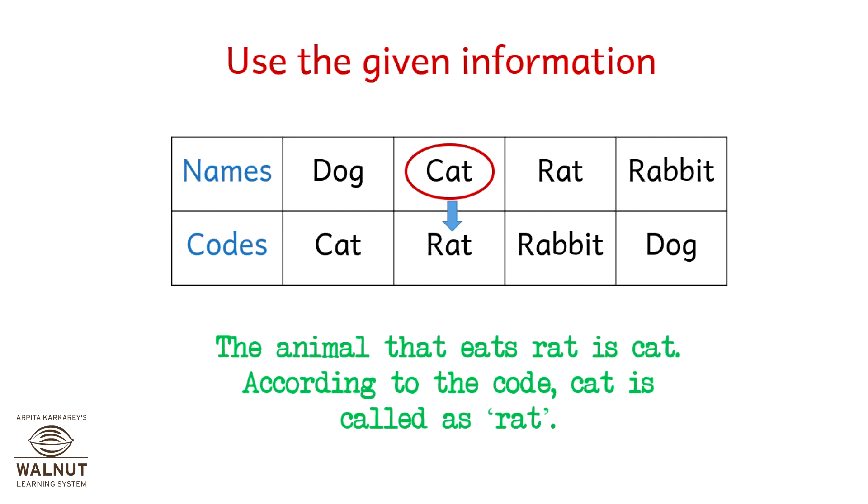Names and codes: we have Dog coded as Cat, Cat coded as Rat, Rat coded as Rabbit, and Rabbit coded as Dog.